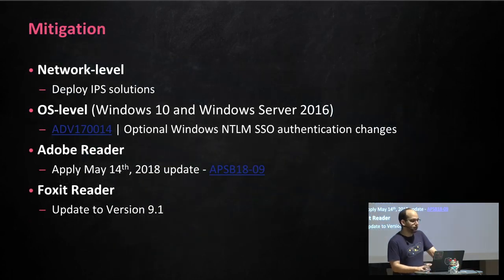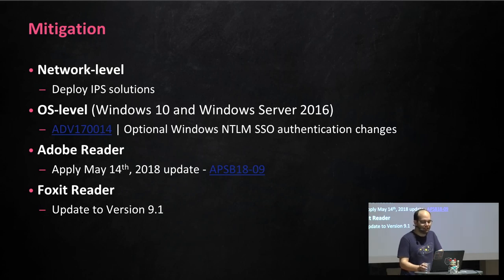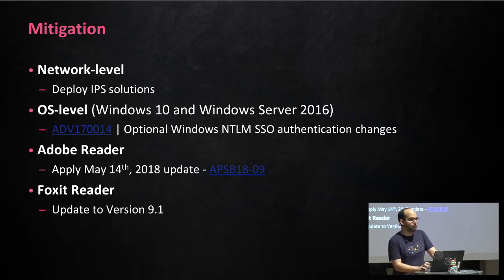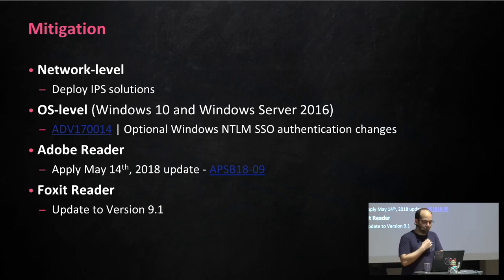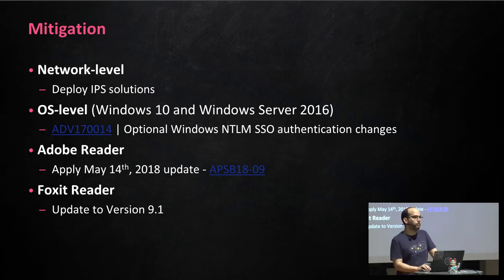As for mitigation, there are several ways to protect yourself against this attack. On the network level, you can deploy IPS solutions that will detect weaponized PDFs. On the OS level, you can apply a Microsoft optional security enhancement which basically prevents NTLM single sign-on attempts from external sources. You can also patch your PDF reader — for example, Adobe Reader published an update last May which was supposed to protect against it, but in February this year it was apparent that the patch could be bypassed, so another CVE was assigned and another patch was released. Foxit Reader, another major PDF reader, has not been vulnerable to this attack since version 2.1.